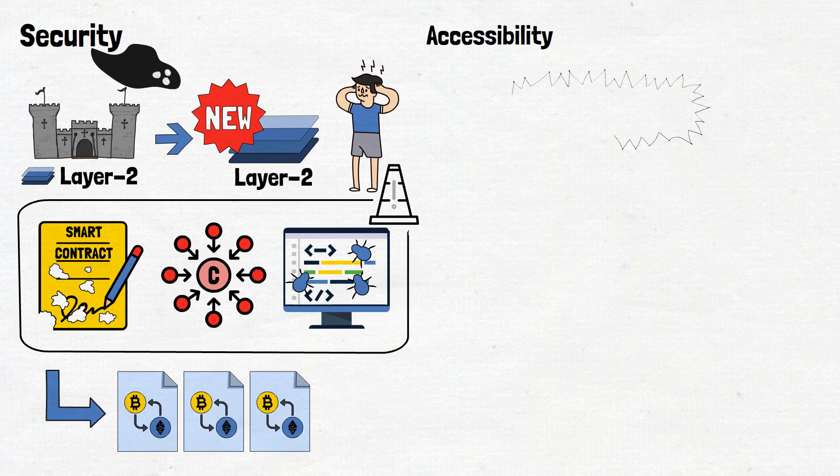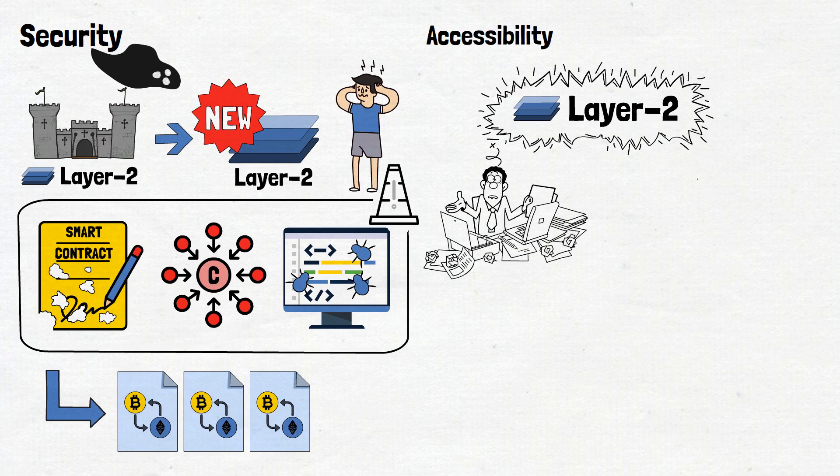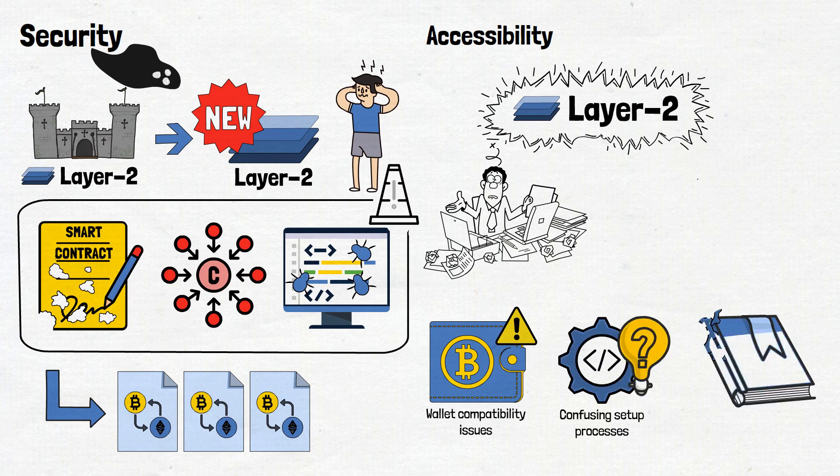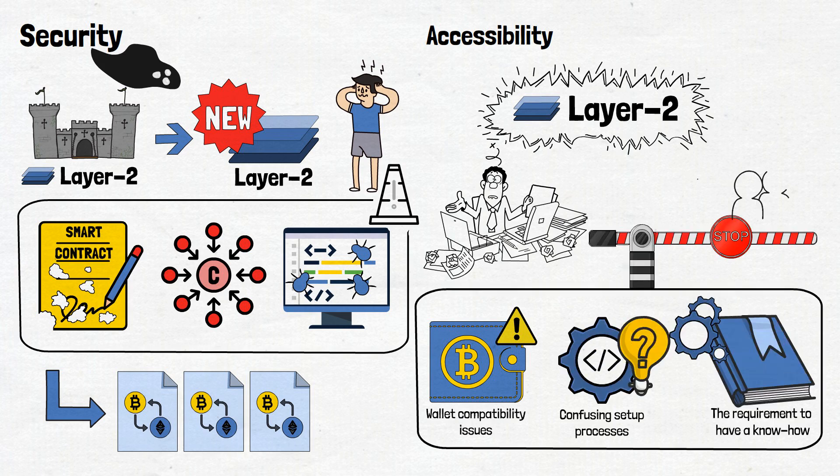Another challenge is accessibility. Despite their potential, Layer 2 solutions might not always be the easiest for everyone to understand or use. Wallet compatibility issues, confusing setup processes, or the requirement for users to have certain technical know-how can act as barriers to widespread adoption.